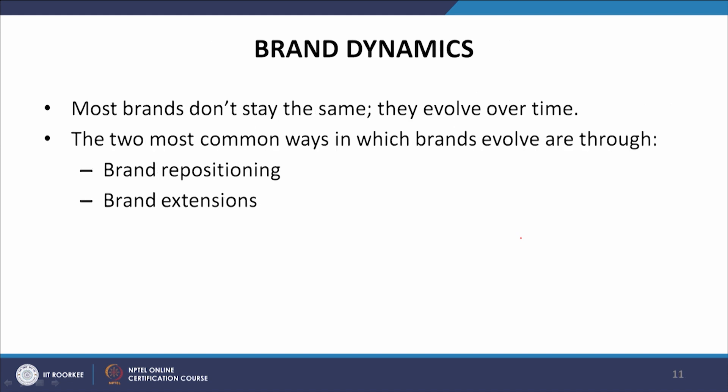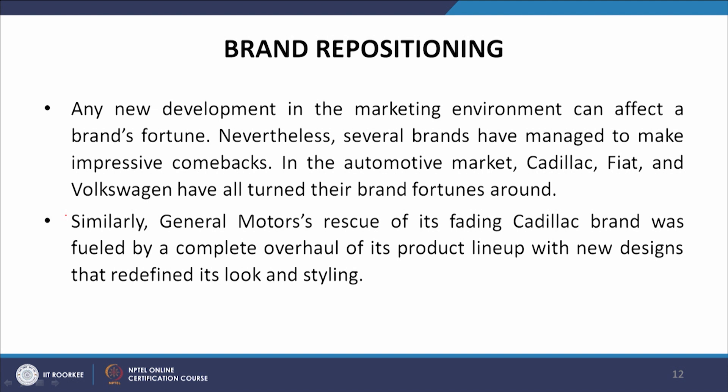Most brands do not stay the same — they evolve over time. The two most common ways in which brands evolve are through brand repositioning and brand extensions. Any new development in the marketing environment can affect a brand's fortune. Nevertheless, several brands have managed to make impressive comebacks in the automotive market. Cadillac, Fiat and Volkswagen have all turned their brand fortunes around. General Motors' rescue of its fading Cadillac brand was fueled by a complete overhaul of its product lineup with new design that redefined its looks and styling.